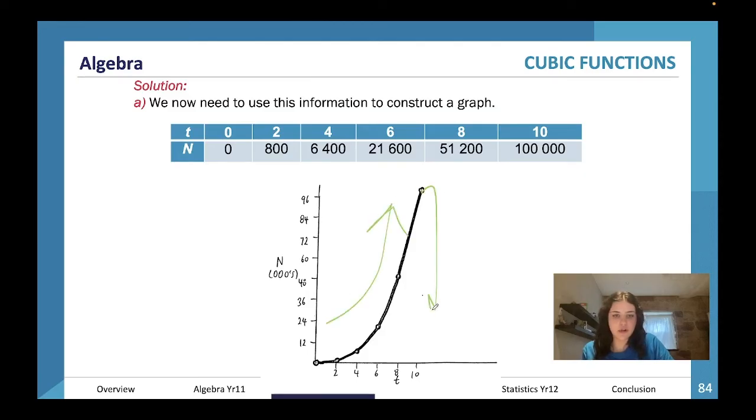This is in thousands. After two days there's 800, after six days there's 21,600, after 10 days there's 100,000. See how we've signified that it's thousands on the side there.